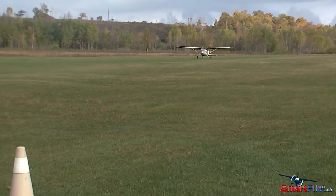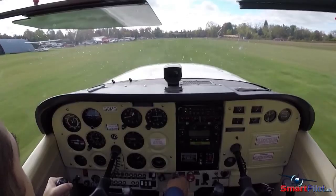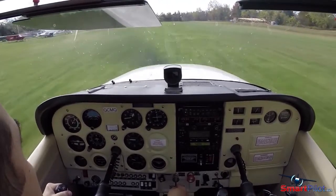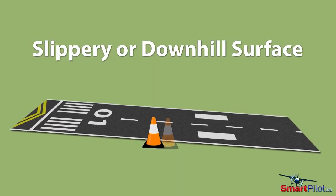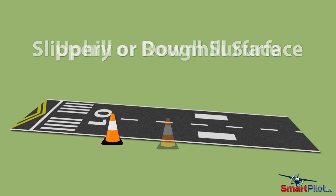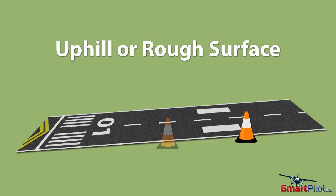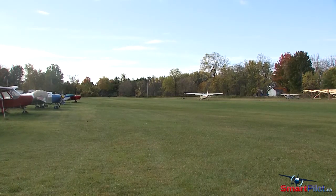For your takeoff roll, the abort point should allow you to stop safely in the remaining runway, taking into account the surface conditions. A slippery or downhill surface will require the abort point to move closer to the takeoff end of the runway, whereas an uphill or rough surface will allow the abort point to move further down the runway, and the surface itself will help slow the aircraft during a rejected takeoff.